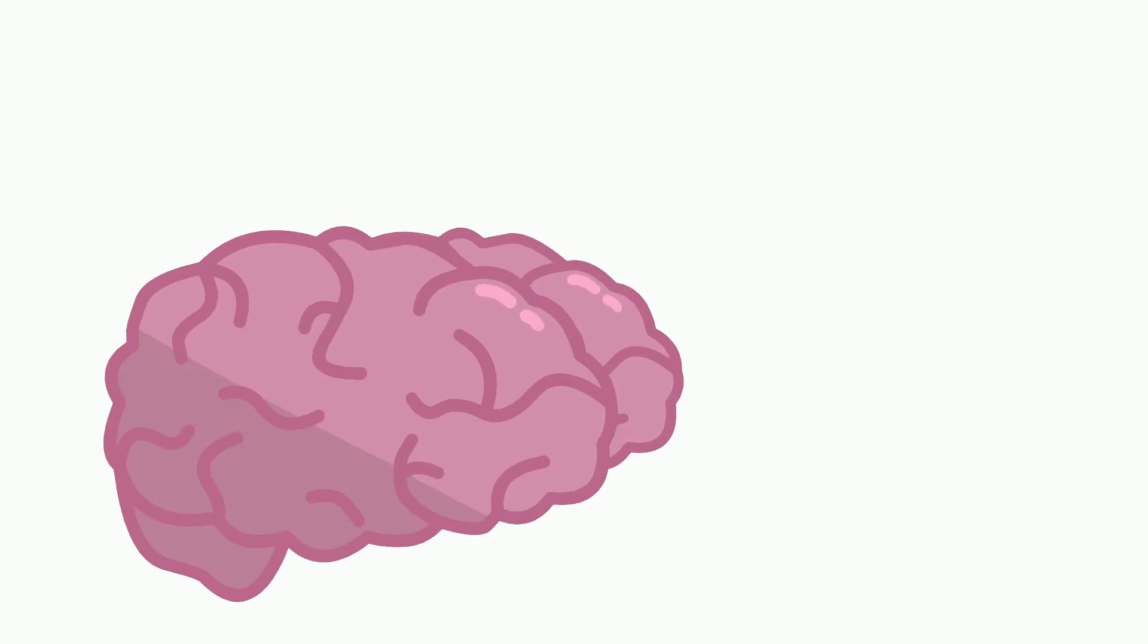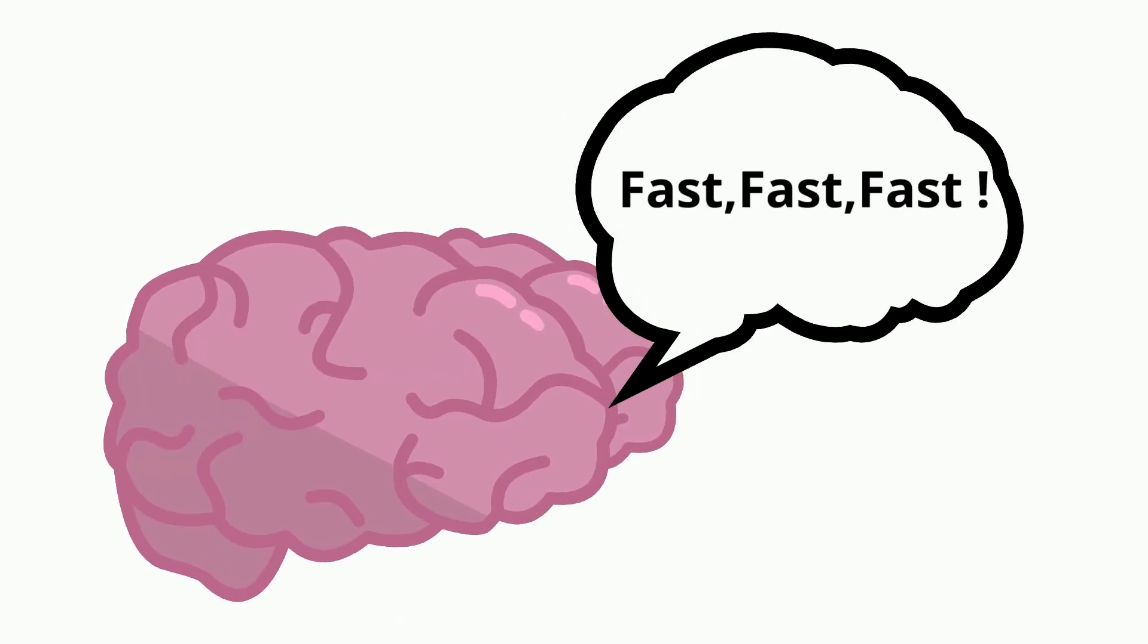In an attempt to be efficient, your brain will apply fast thinking as often as possible, but it may cause some mistakes. For example, see if you can read this passage.